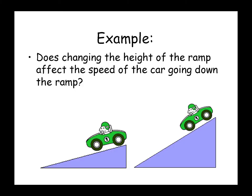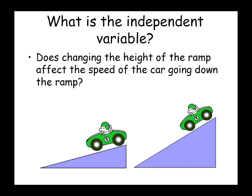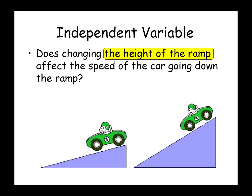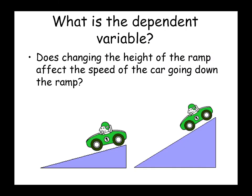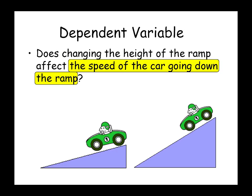Example: Does changing the height of the ramp affect the speed of the car going down the ramp? The independent variable is the height of the ramp, because this is what you are changing. The dependent variable is the speed of the car going down the ramp. You do not change the speed of the car — you change the height of the ramp. The speed of the car depends on the height of the ramp.